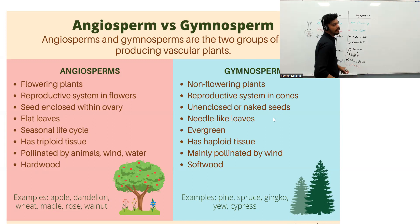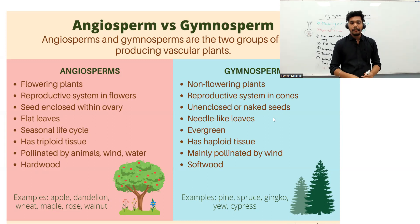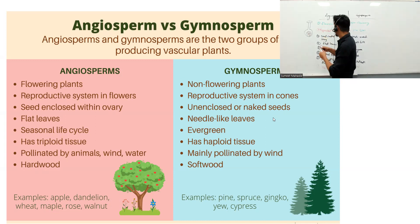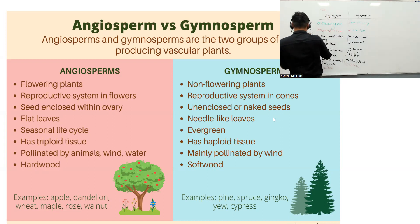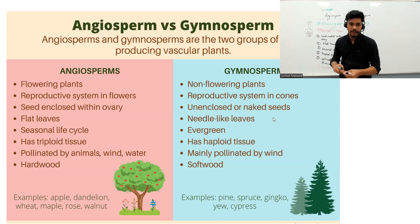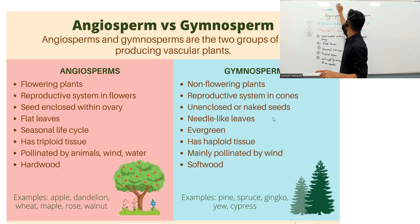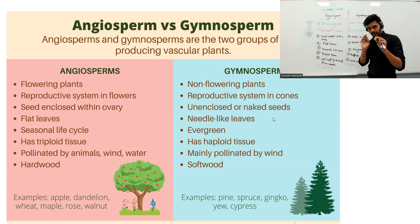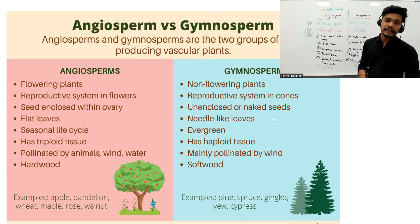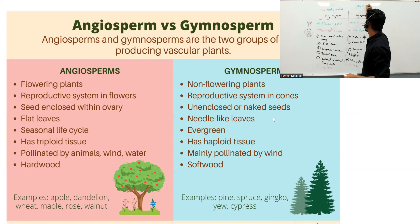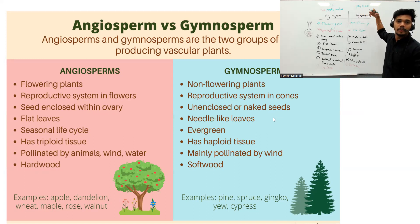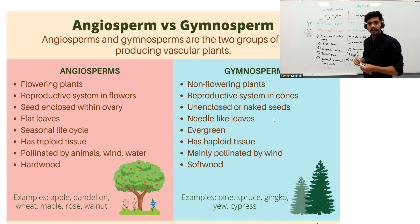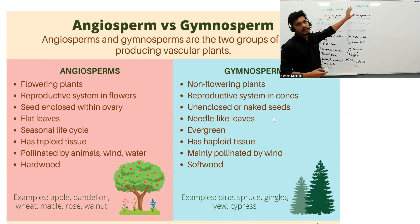Examples of angiosperms include apple, maple, rose, and walnut — walnut being a hardwood example. Examples of gymnosperms include pine and cypress. You can observe that gymnosperms don't flower at all; they keep on growing with needle-like structures. That covers the difference between angiosperms and gymnosperms.